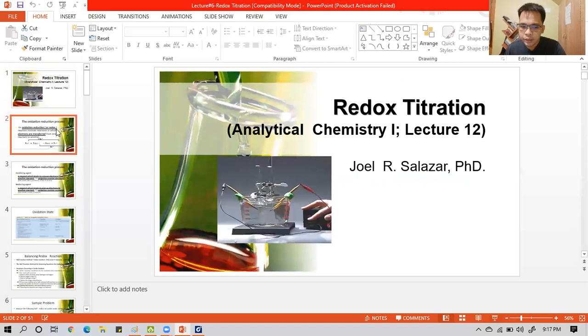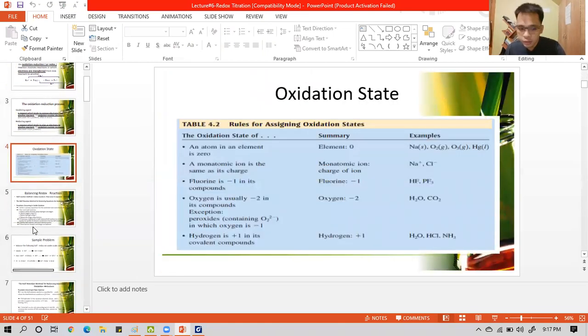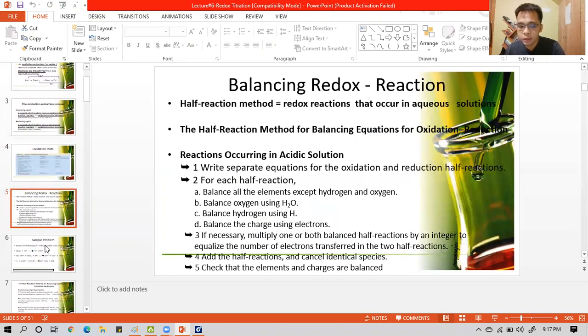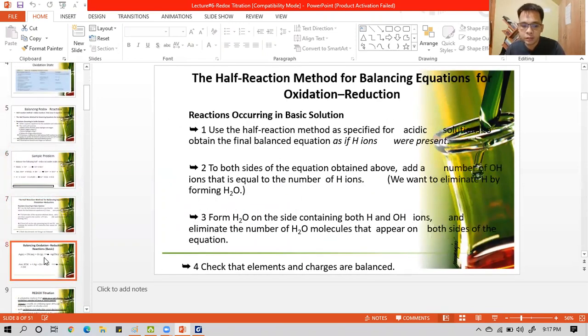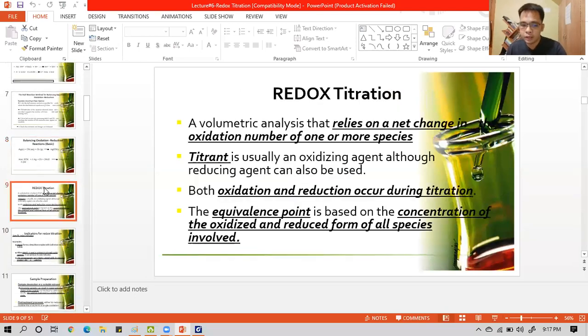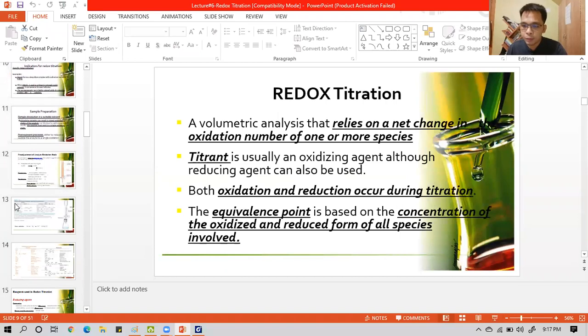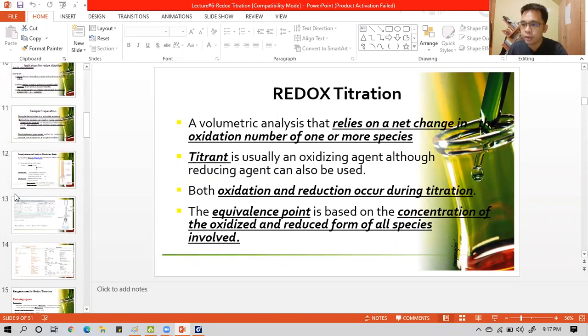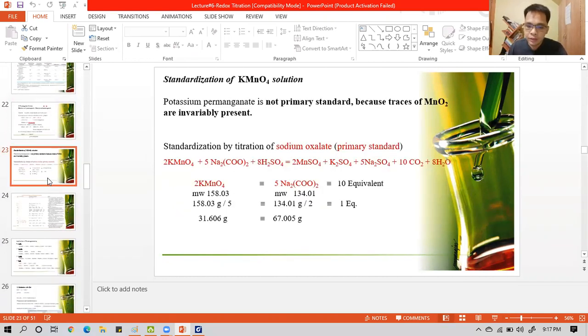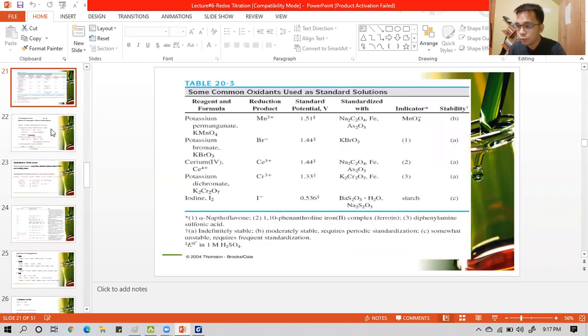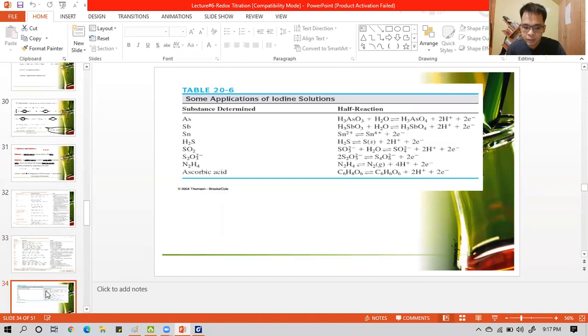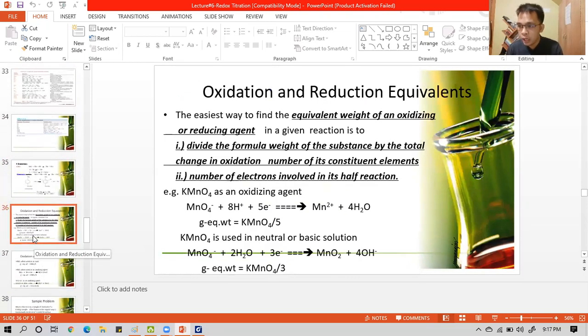In this chapter we'll discuss the oxidation reduction process, the oxidation state, balancing redox reaction in acidic medium, and balancing redox reaction in basic medium. We will also discuss redox titration, the titrant, the indicators used, and the analysis for redox titration. Then we will discuss the reducing agent, titrant reducing agent, and titrant oxidizing agent. We will have some sample problems to be discussed in the next part of our lecture.